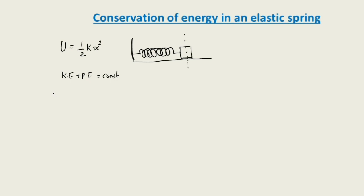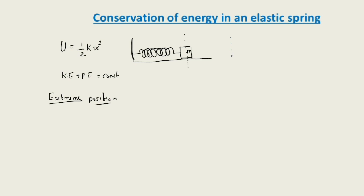The first case we discuss is at the extreme position. At the extreme position, what is the total energy? We are applying a force on the mass, and if we release that force, the spring-mass system will start oscillating. Consider the body has now reached the extreme position — what is the energy stored in that condition?